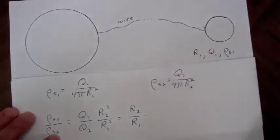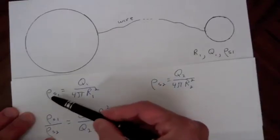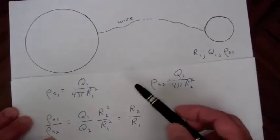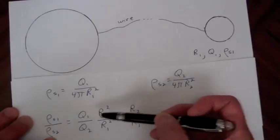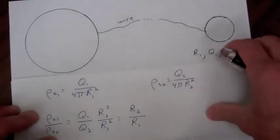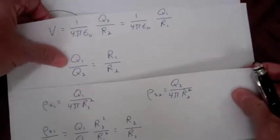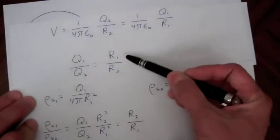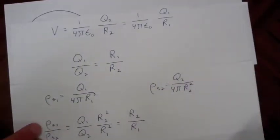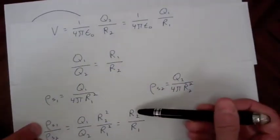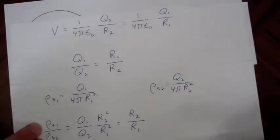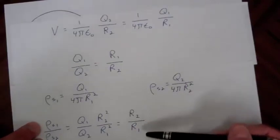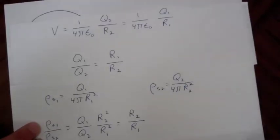Here we have the charge density on the two spheres. Dividing the charge density on sphere 1 by the charge density on sphere 2 gives Q₁/Q₂ times R₂²/R₁². We've already found that Q₁/Q₂ equals R₁/R₂, so the ratio of the charge densities is just the ratio of the radii. This clearly shows that charge density depends on the radius of curvature at that point on the object.